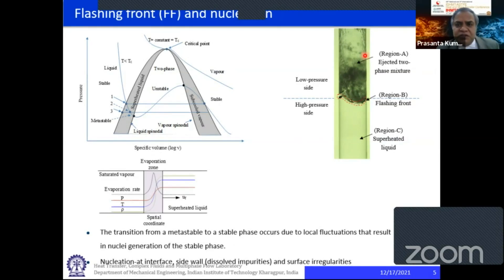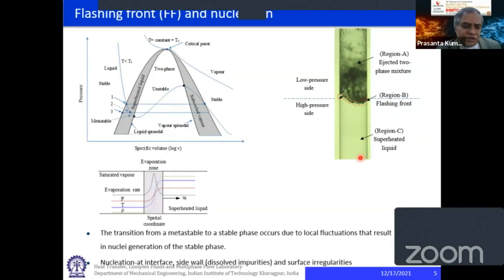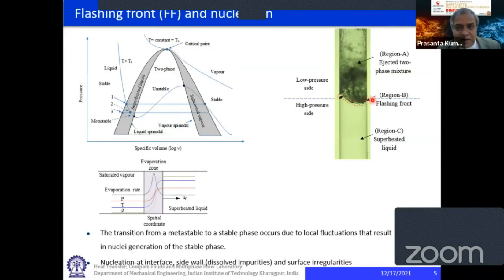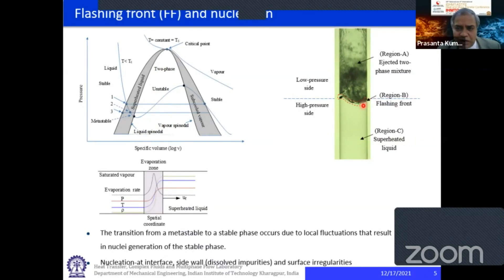We have got three regions: a two-phase region at the top, a superheated liquid region below, and a flashing front moving in the downward direction. This flashing front is a finite but very narrow region. As the figure indicates, it is not a flat front — it can have any kind of arbitrary shape, and its shape changes as the front propagates.